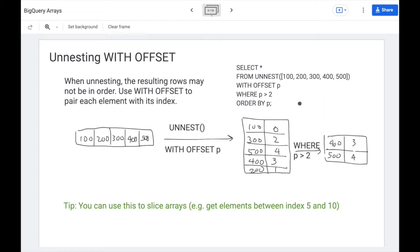And then you can use where after you offset, just like with any other SQL expression. Now, when you say with offset, you provide a variable so you can reference that variable name as well. So if I say where p is greater than two, I'm just picking all the elements beyond position two. And so that gives me 400 and 500. So you can use this technique to slice arrays.